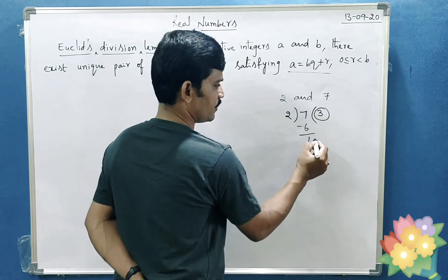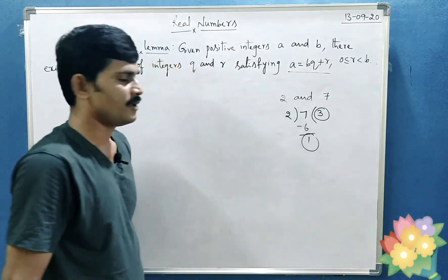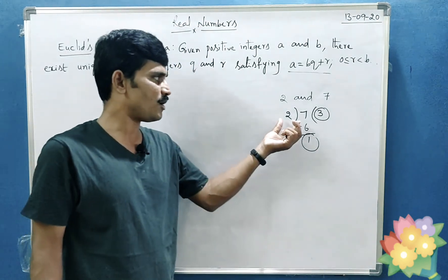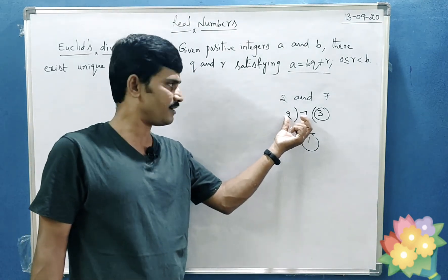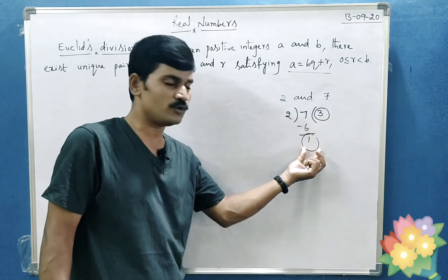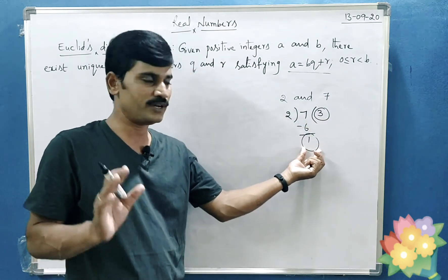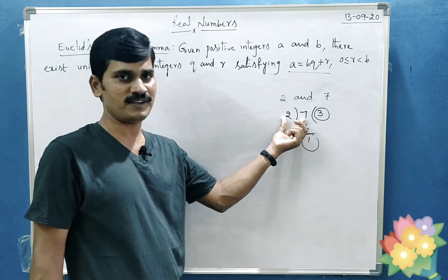So you are getting two more integers regarding the given two integers. These two are unique for the given two positive integers.